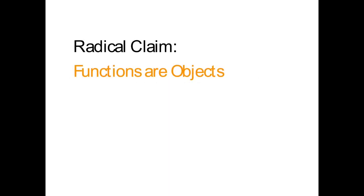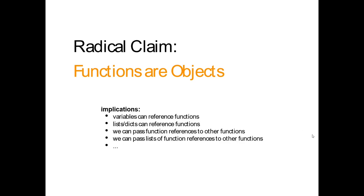As we begin this lecture, the second of three on advanced functions, I'm going to make the radical claim that functions are actually objects. This has a number of consequences for us. It means that variables hold references to objects, so we can have a variable that refers to a function. Parameters are just special variables that hold references to objects also, meaning we can pass a function as a parameter to another function. We can also put functions into lists and dictionaries, and even pass lists of function references to other functions.